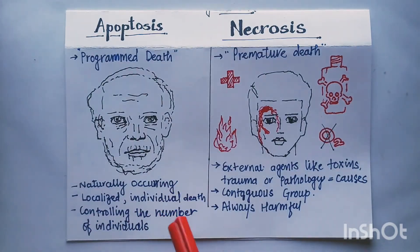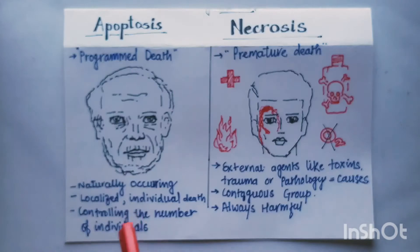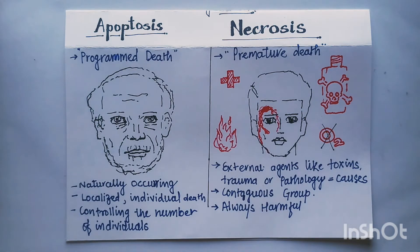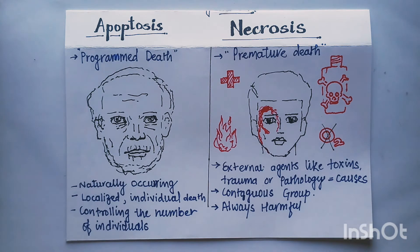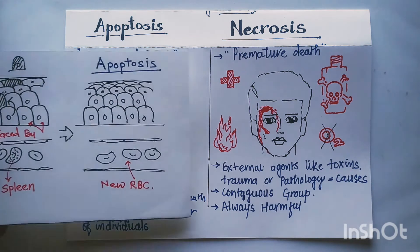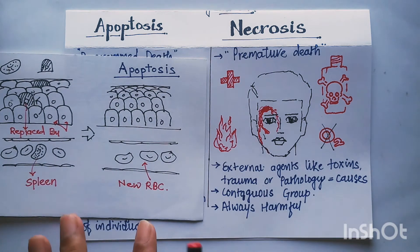Apoptosis is localized and affects an individual cell, whereas necrosis involves a large number of cells. Apoptosis is beneficial for the body because it controls the number of cells, whereas necrosis is never beneficial — it is always harmful. The body always has an inflammatory reaction to necrosis, but there is no inflammation in apoptosis.